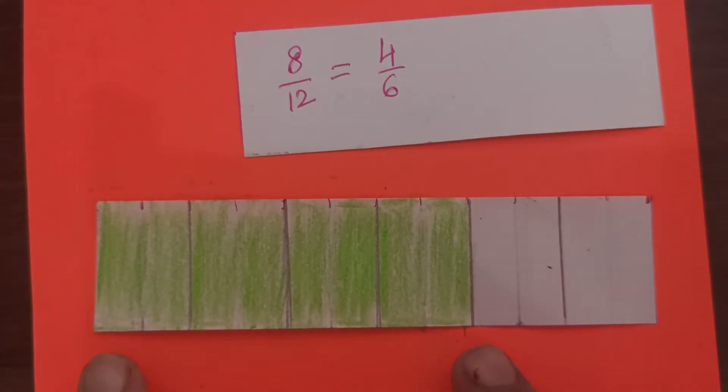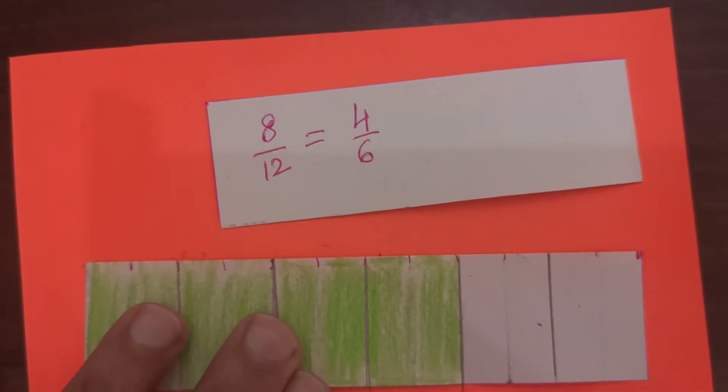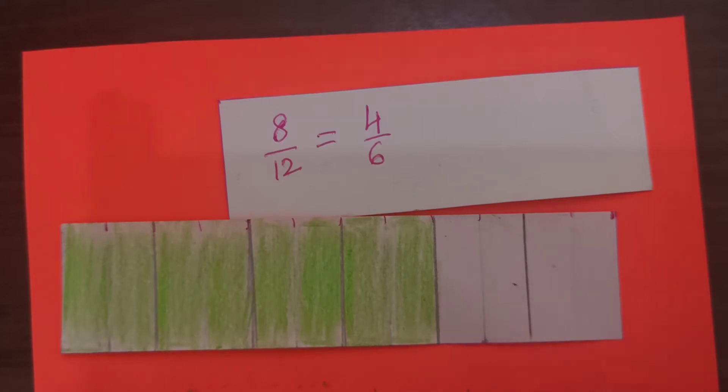4 out of these 6 parts are shaded. But, the amount of shaded area is the same. So, 8 twelfths is equivalent to 4 sixths. I have simplified the fraction.